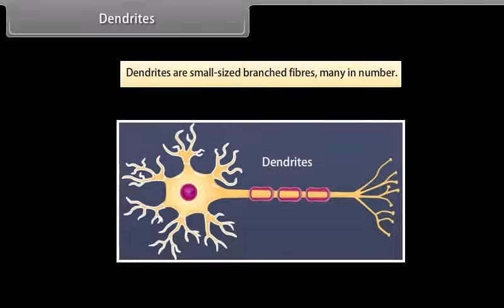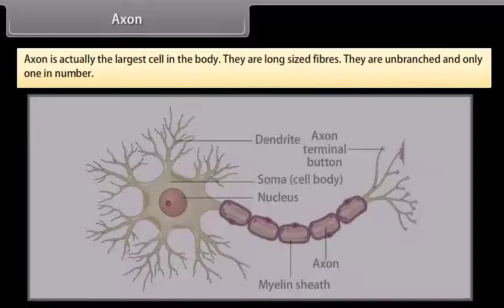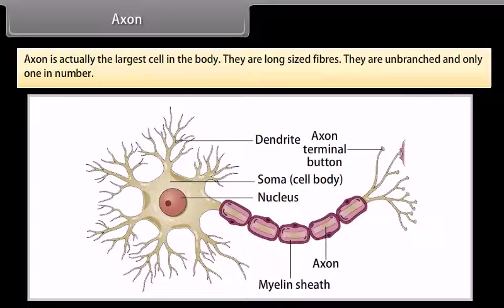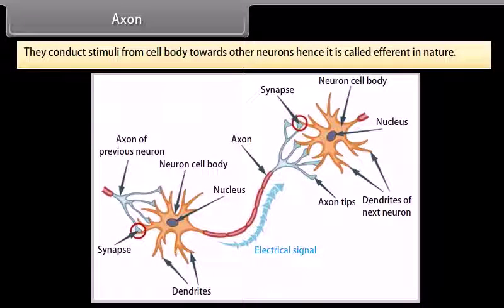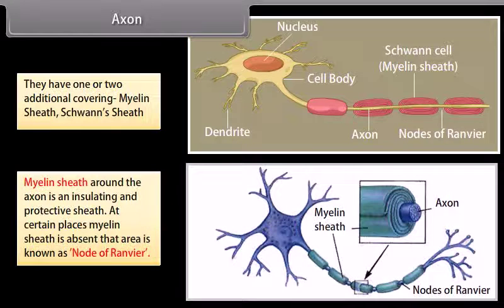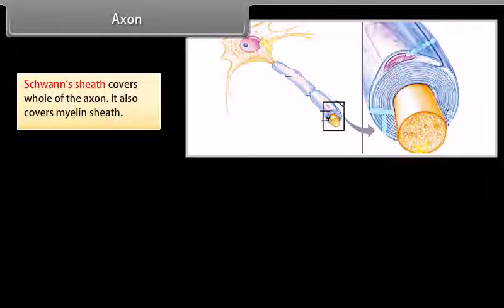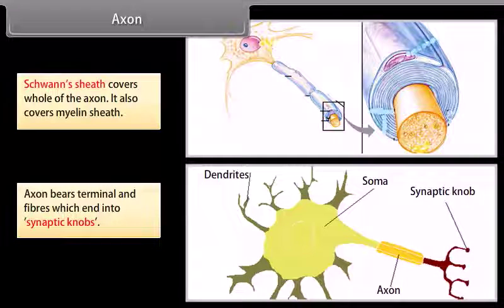Dendrites are small, branched fibers, many in number. They conduct stimuli to the cell body, hence called afferent in nature. The axon is the largest cell process; it is long, unbranched, and only one in number. It conducts stimuli from the cell body towards other neurons, hence called efferent in nature. The axon has one or two additional coverings: the myelin sheath, which is an insulating and protective sheath, and the Schwann sheath which covers the whole axon including the myelin sheath. Areas where the myelin sheath is absent are known as nodes of Ranvier. The axon bears terminal end fibers which end in synaptic knobs.